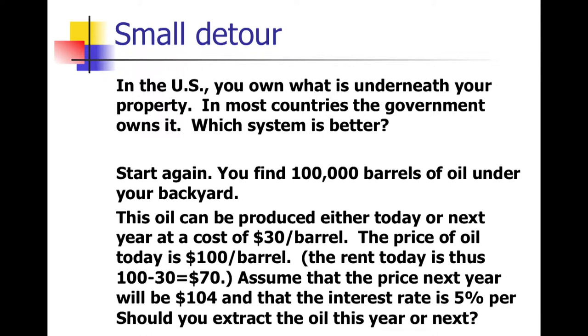Okay. Now, you have 100,000 barrels of oil in your backyard. It can be produced either today or next year at a cost of $30 per barrel. The price today is $100, which means the rent is $70. The rent is $70. Okay. So rent is price minus cost. Assume that the price next year will be $104 and the interest rate is 5%. Should you extract the oil this year or next year? This year. This year. Why do you say that, Lily? Because if it's at 5%, then you'd have next year, you'd be spending more money on interest than you would this year. I think you might be seeing too much in my question. I'm saying next year. Why do you say next year? Because your cost of getting the oil out of the ground will stay the same and you'll be making more money.